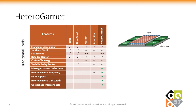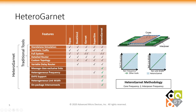This is where HeteroGarnet comes to the rescue. It is an interconnect simulator integrated with GEM5 and enables accurate modeling of modern heterogeneous systems. It adds support for heterogeneous routers, links, multi-frequency domain crossings, and link-widths, and several other features to the widely popular Garnet network model. HeteroGarnet allows tuning the interposer clock domain individually, thereby enabling accurate modeling of the interconnect.